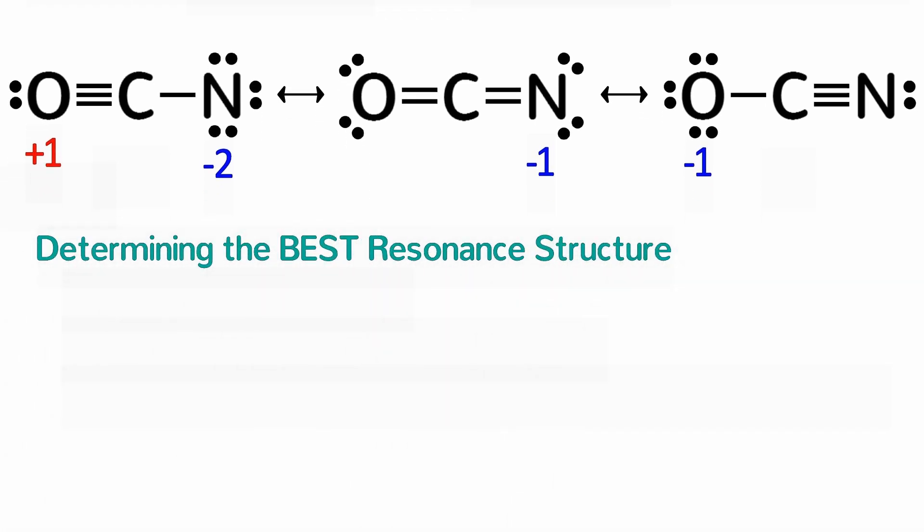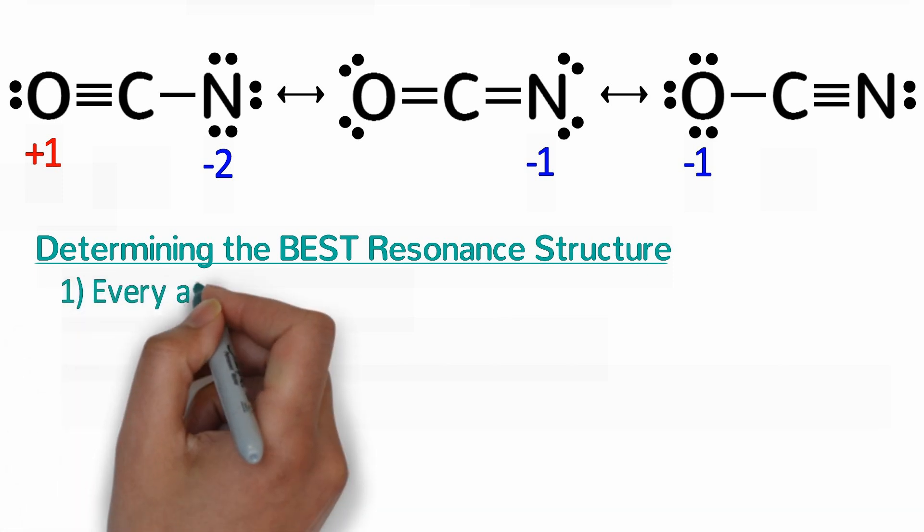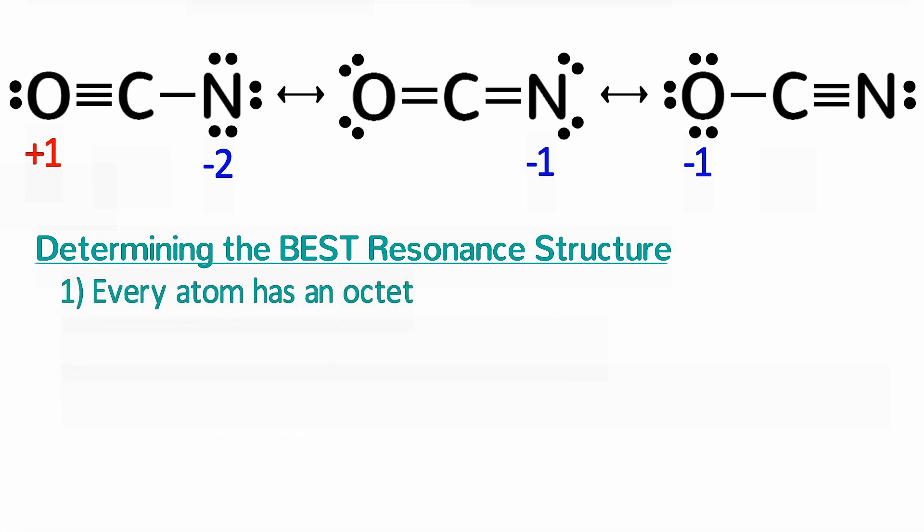Typically, the best resonance structure is going to be one in which every atom has an octet or duet for hydrogen. That's not always possible, but if it is possible, it's usually the most important rule. For example, this structure for cyanate is worse than the other three because carbon has only six valence electrons.